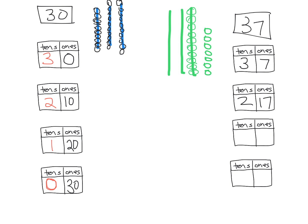If I cash in that next quick ten for ten individual units, now I only have one ten, and now I have 27 ones. And one last one — if I cash that remaining ten in, I end up with zero tens and 37 ones. So parents and teachers, this is the kind of flexibility we're trying to develop in students — the ability to take a ten and think of it as one big quick ten, or as ten separate individual units.